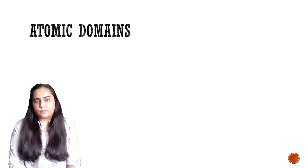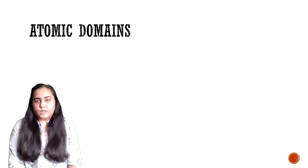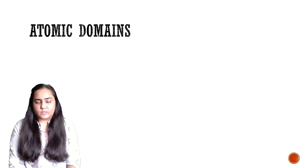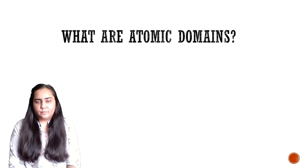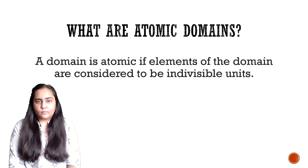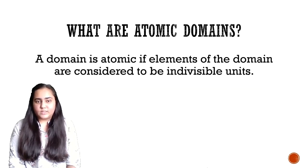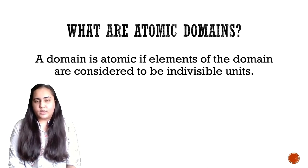Whenever we talk about relational database design, the concept of atomic and non-atomic domains comes up. I've already talked about this in relational models in my previous videos, but I'm going to revise it once again because it's important in studying relational database design. A domain is atomic if elements of the domain are considered to be indivisible units — meaning whatever values you're storing in a column must be indivisible.